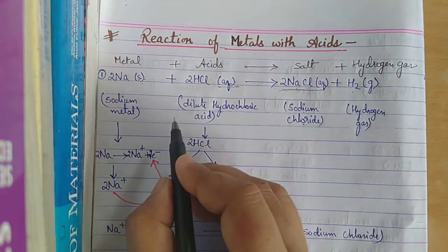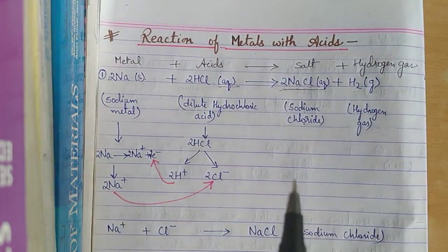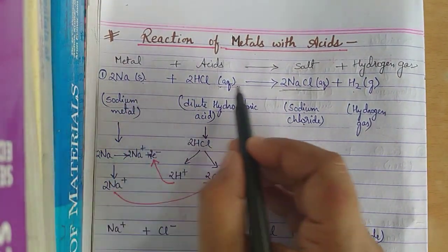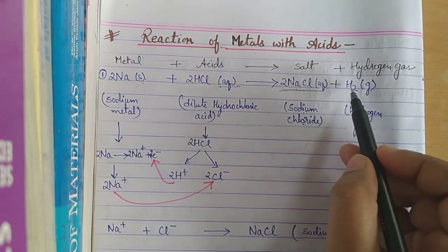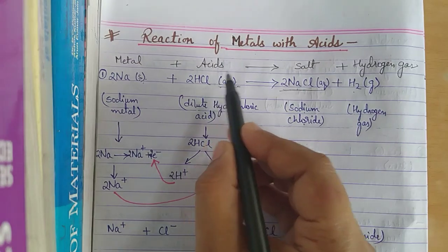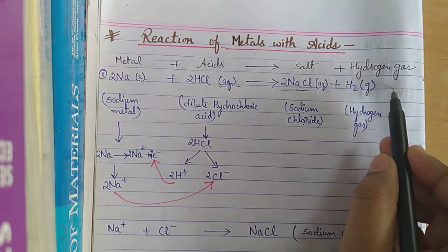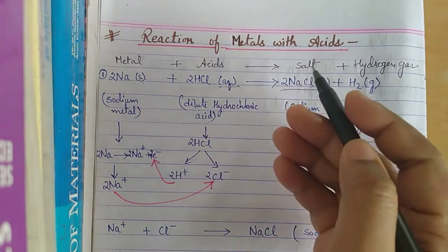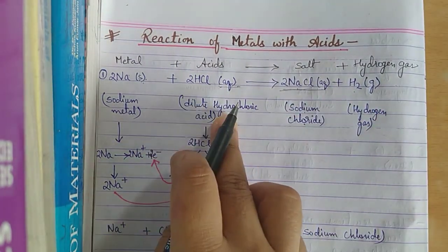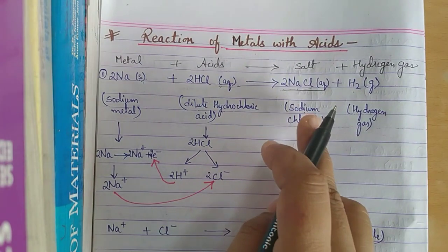Now we have a choice: either just memorize that metal reacts with acid to form salt plus hydrogen gas, or let's understand how metal reacts with acid to form salt and hydrogen gas.